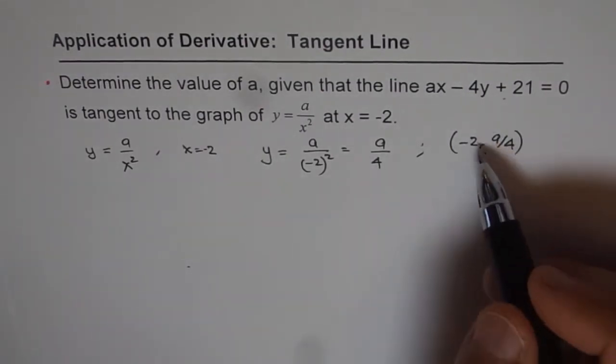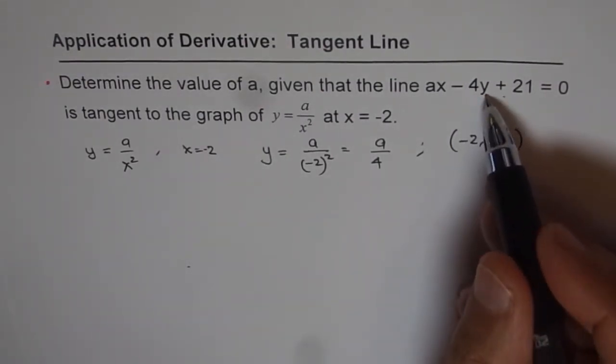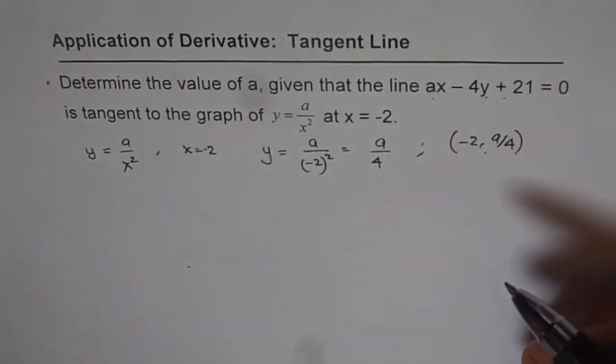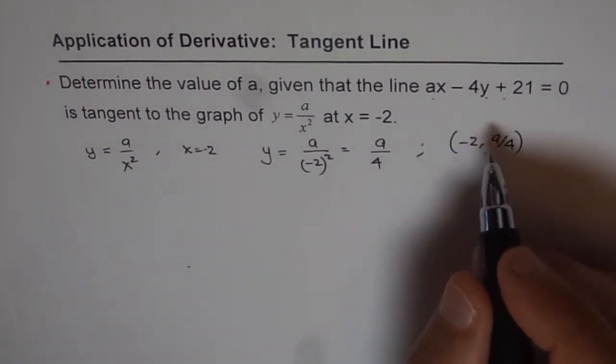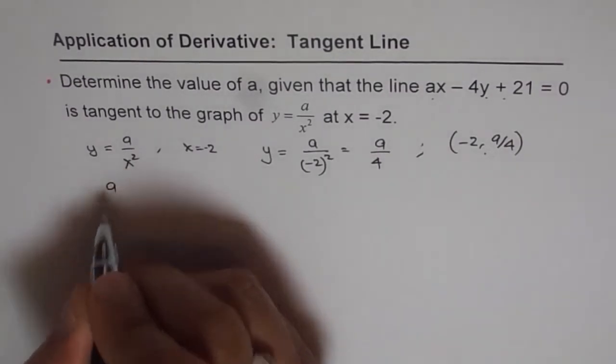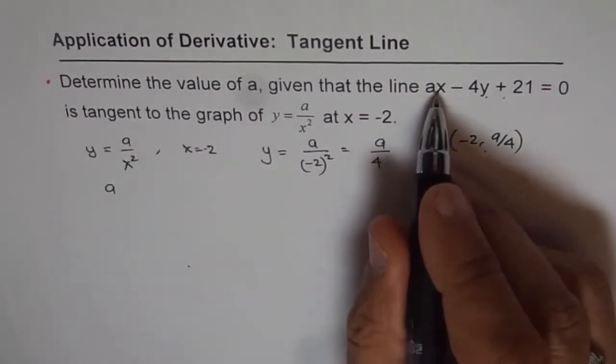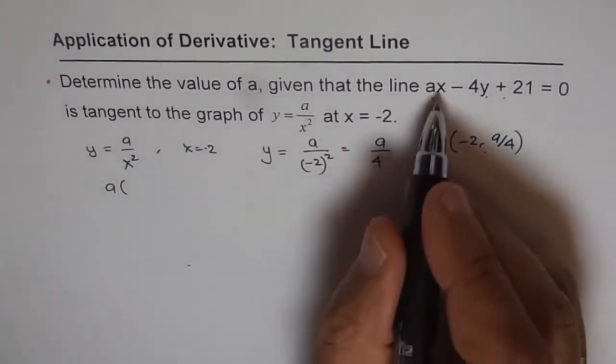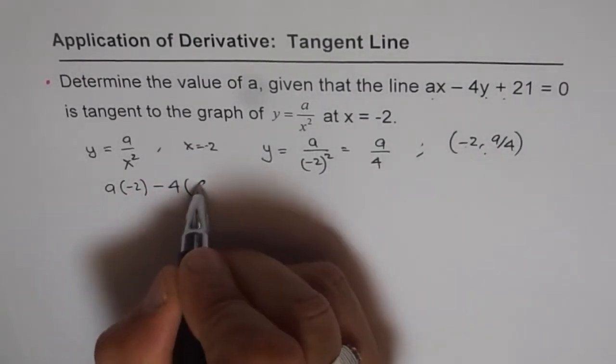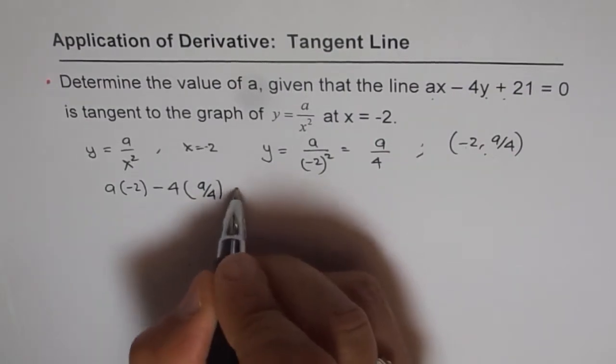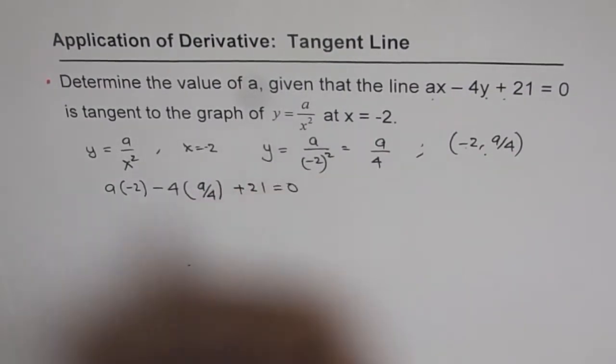And so, we can substitute this point on the line and find the unknown value of A. Do you understand? That is how we are going to solve it. So we will substitute X as minus 2 in our line equation, which is X as minus 2 minus 4 times Y is A over 4 plus 21 equals 0.